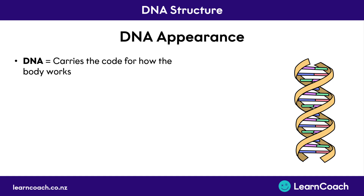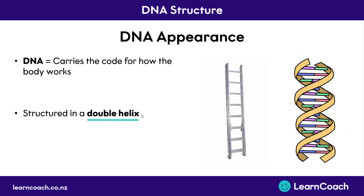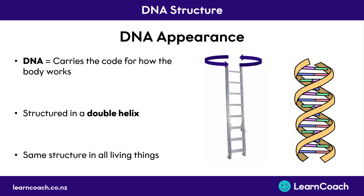DNA carries the code for how the body works. Something we didn't talk about is what DNA actually looks like, and we can see a picture of DNA on the right here. DNA is structured in this shape called a double helix, with these two yellow lines twisting around each other, and these rungs holding together the two yellow lines. Think of it a little bit like if you took a ladder and twisted the top of that ladder again and again.